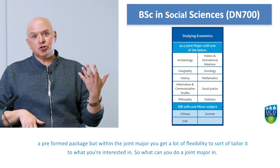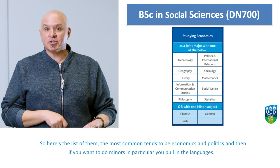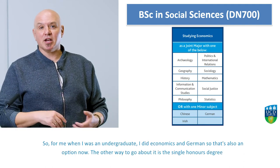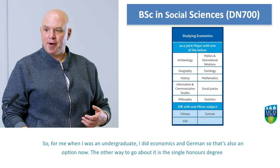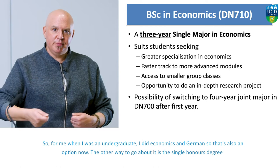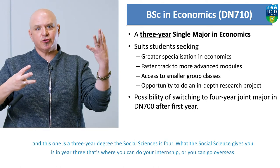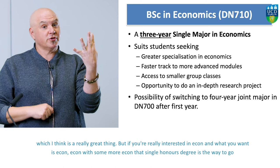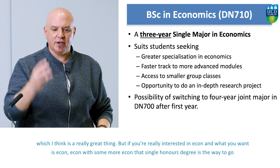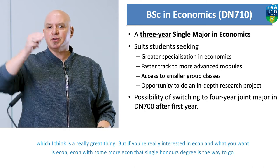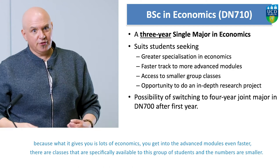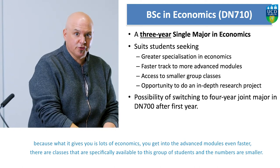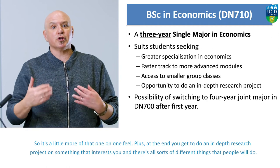What can you do a joint major in? The most common tends to be economics and politics. If you want to do minors, languages are particularly popular — I myself did economics and German as an undergraduate. For the single honors degree, this is a three-year degree. The social sciences degree is four years and includes year three for an internship or going overseas, which is great. But if you really want economics with more economics, the single honors gives you lots of economics, gets you into advanced modules faster, has classes specifically available to this group, and smaller numbers for a more one-on-one feel.